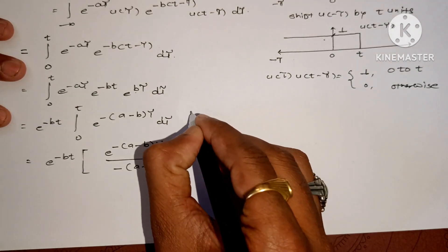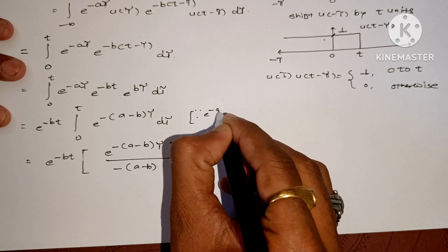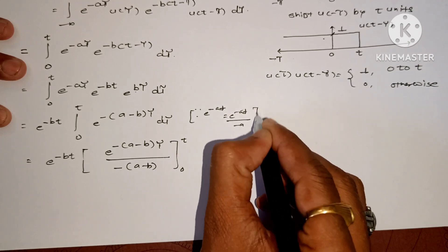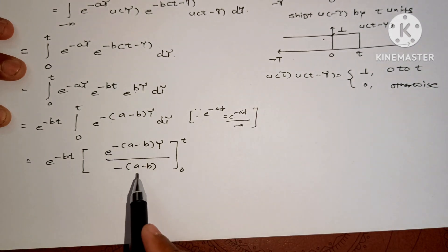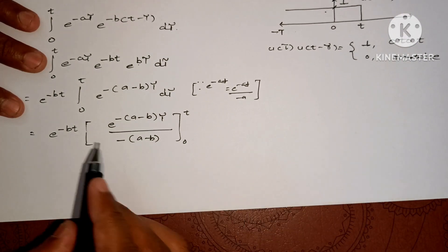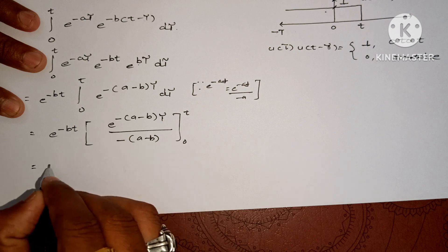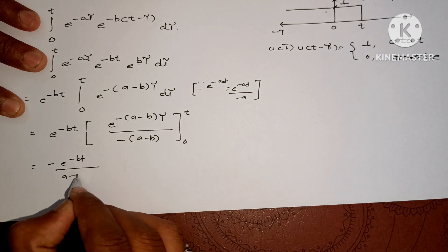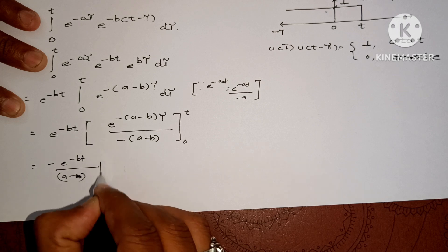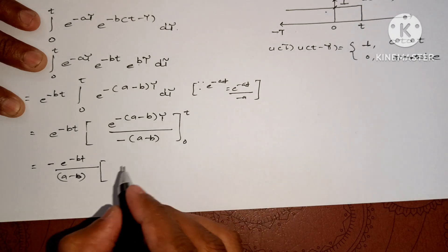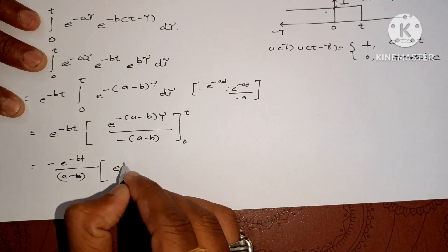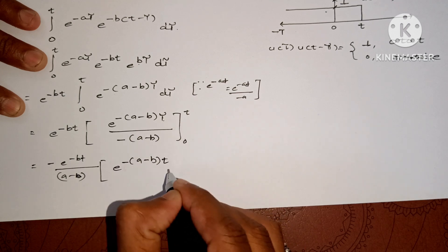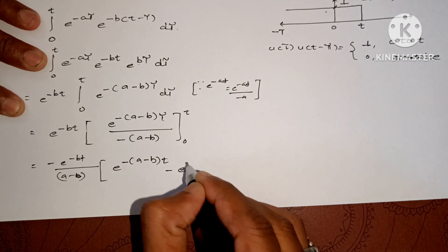Using the standard integration formula — integral of e raised to minus at equals e raised to minus at divided by minus a — we take e raised to minus bt as the constant factor, with (a minus b) in the denominator. We then substitute the upper limit t and the lower limit 0 into e raised to minus(a minus b)τ.